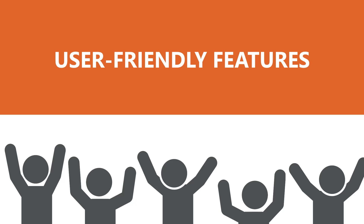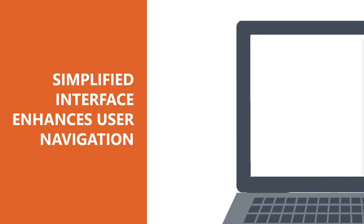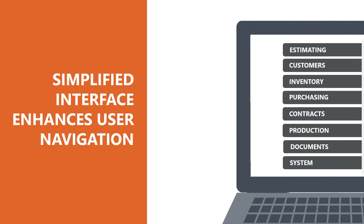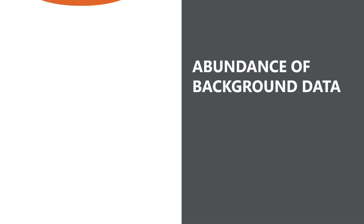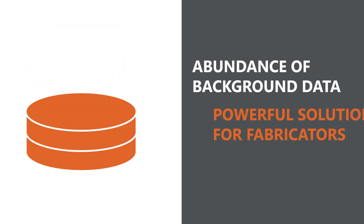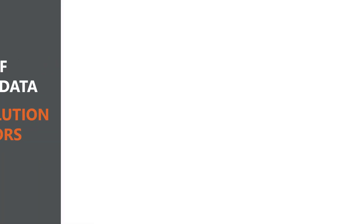Strumis is equipped with a variety of user-friendly features that are integrated into the product. User roles are a must in any software when it comes to keeping sensitive information, like financial details, out of the wrong hands. Not only that, but they can also help you customize the user interface by turning certain features on and off, making it easier for different types of users to navigate the software. In the background, the abundance of data that makes Strumis the most powerful solution for steel fabricators remains available to all other users in your organization.